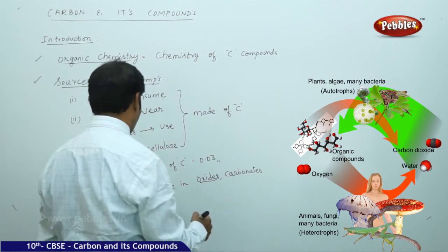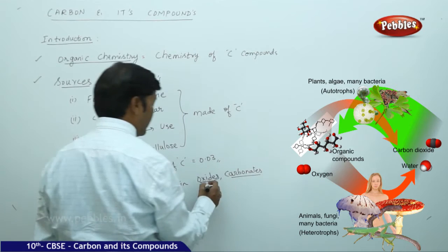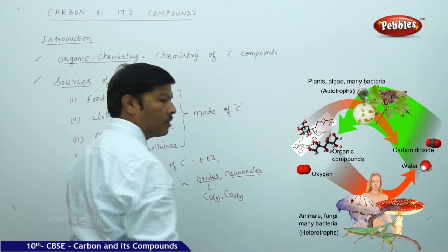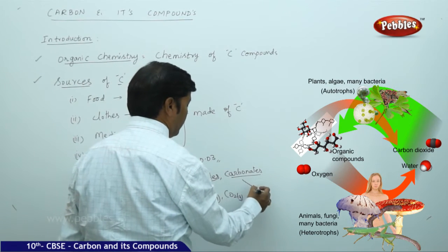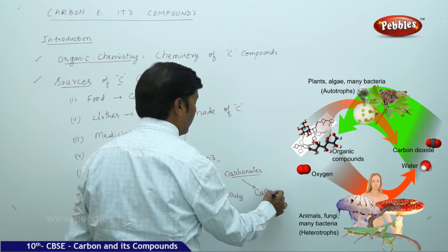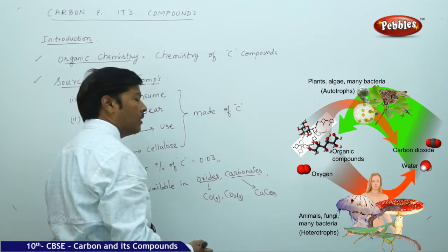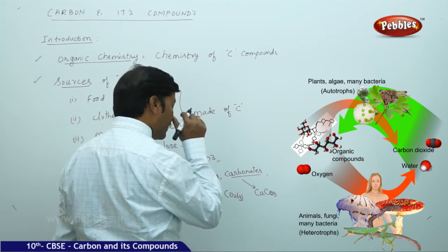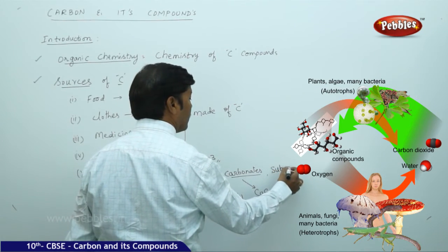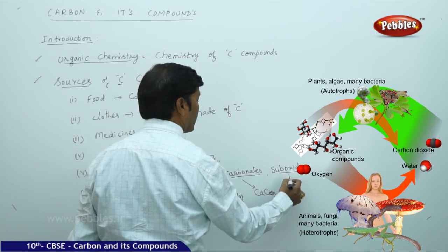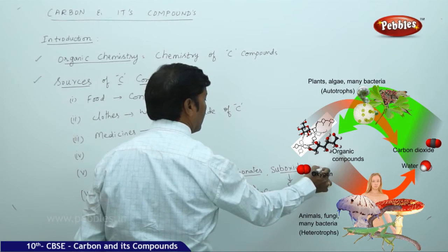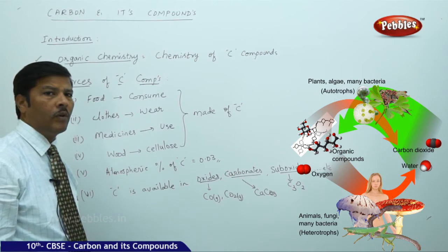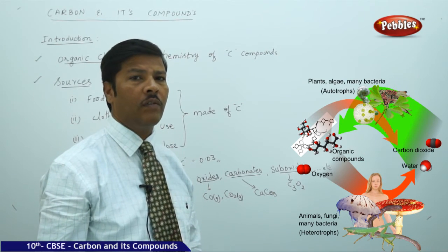Carbon is everywhere — it is also available indirectly in oxides, carbonates, and chlorides. Oxides include carbon monoxide gas and carbon dioxide gas. Carbonates include calcium carbonate. Carbon is also found in the form of sub-oxides such as C₃O₂ and so on. All these are sources of carbon compounds.